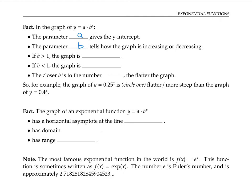Specifically, if b is greater than one, the graph is increasing. And if b is less than one, the graph is decreasing.